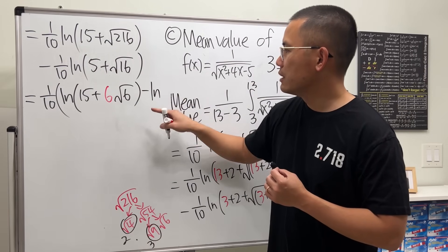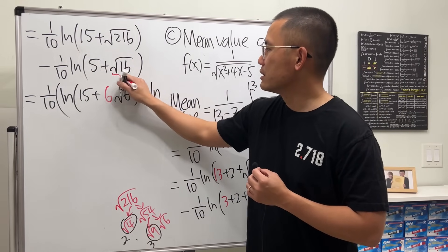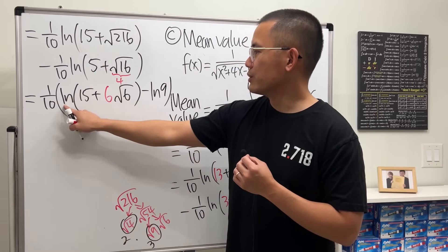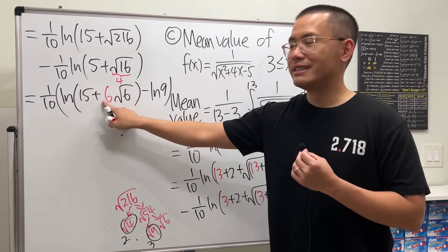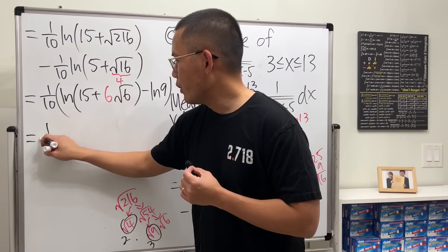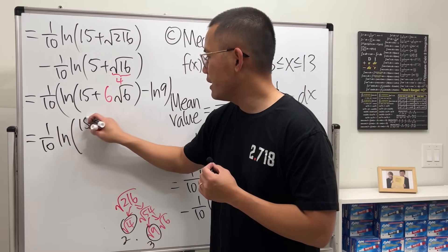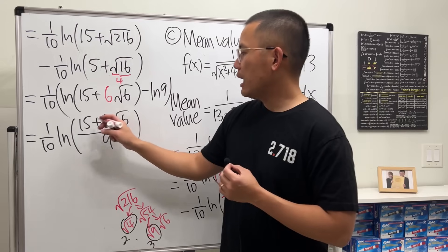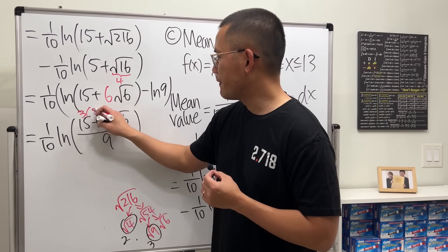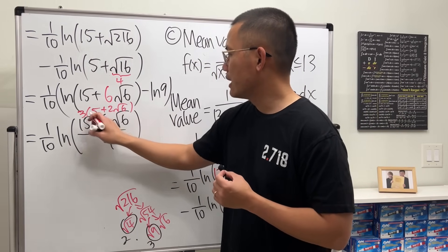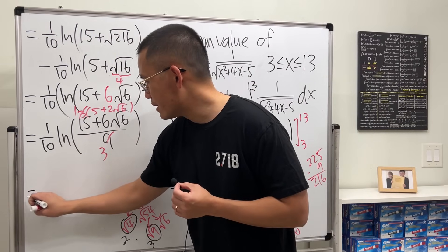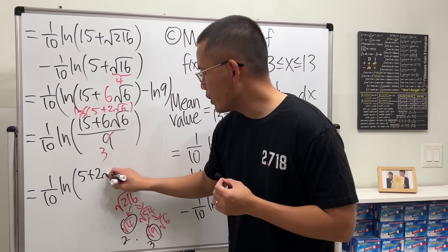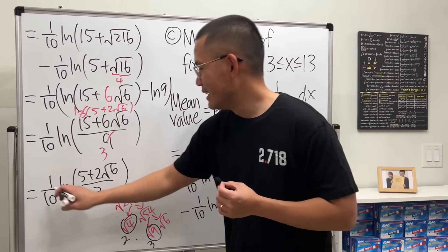Factoring out the 1/10, the second term is ln(5 + 4) = ln(9). We then combine using log subtraction: (1/10) × ln[(15 + 6√6) / 9]. Simplifying by factoring 3 from the numerator: (15 + 6√6)/9 = 3(5 + 2√6)/9 = (5 + 2√6)/3. So the final answer is (1/10) × ln[(5 + 2√6) / 3].